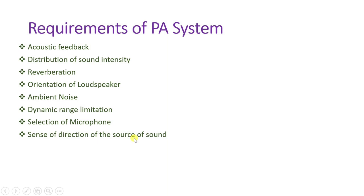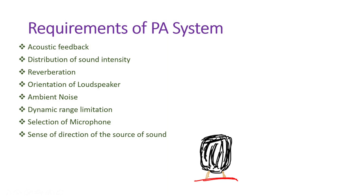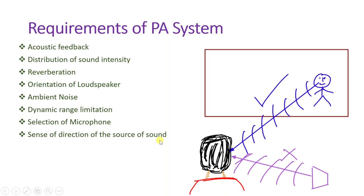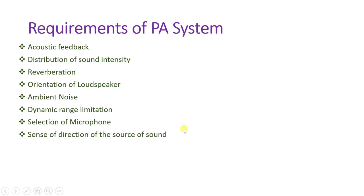Sense of direction from the source of sound is also important. The loudspeaker should be placed in such a way that sound appears to come from the direction of the source only. Human ears determine direction from the first sound they receive, so when multiple speakers are used they must be arranged so the audience senses sound coming from the direction of the actual sound source.